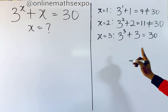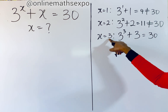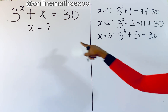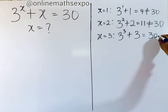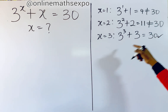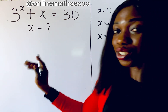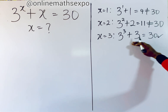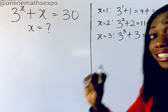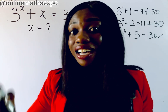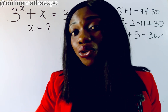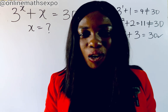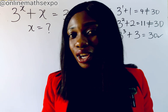What it means is that the value of x we are expecting to get here is 3. But that does not mean we are going to just conclude that — this is a Harvard exam. They need you to show all workings, and that is what I want to teach you.